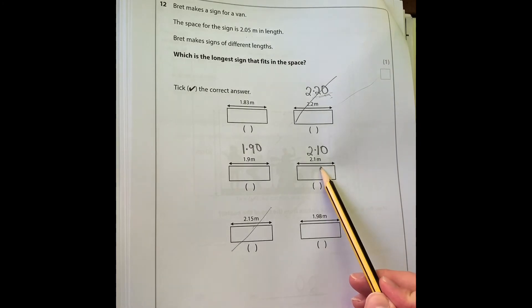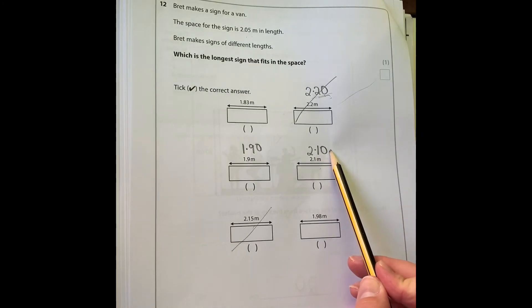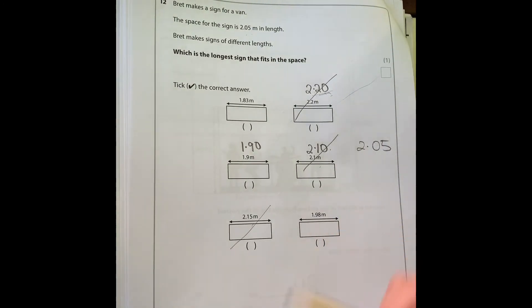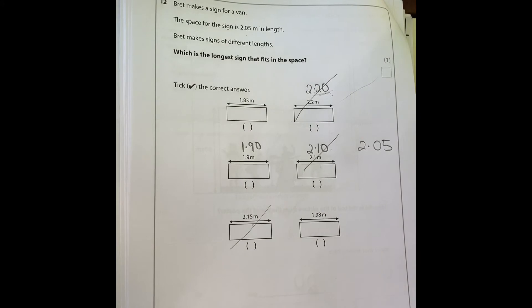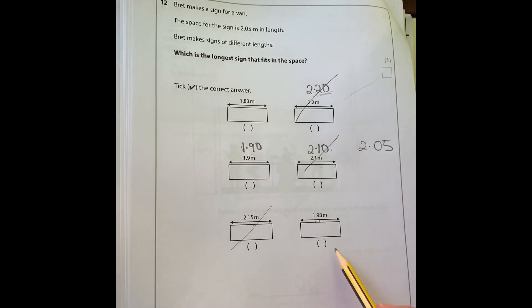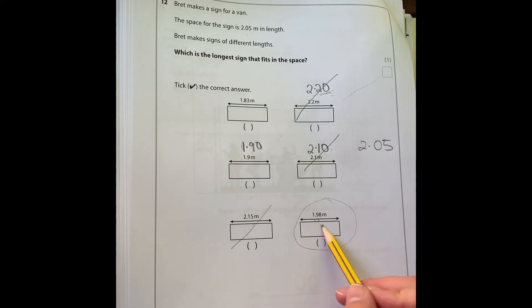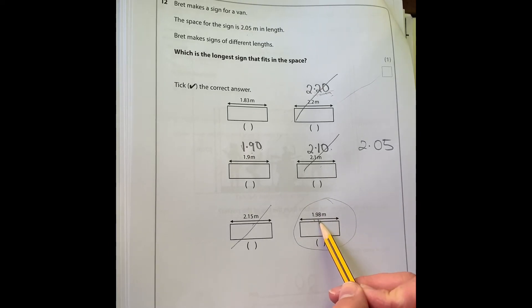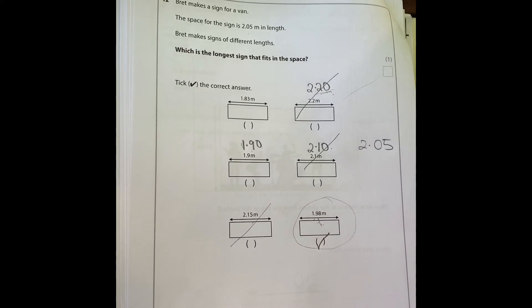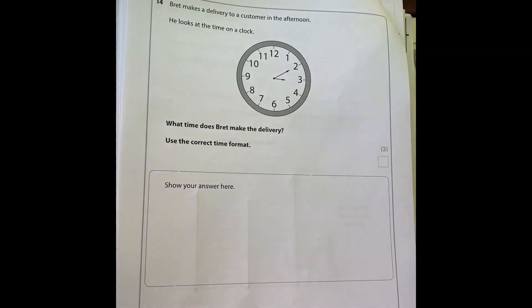Even this one here, 2.10, is larger than 2.05. So the next one down, now we've got 1.90 and 1.98. It's easier to see this is the next one down and actually yes, that will fit. So I would go with this one: 1.98 meters as being the longest sign that will fit.